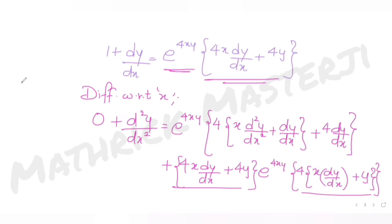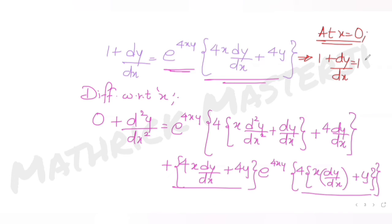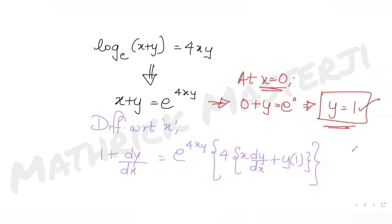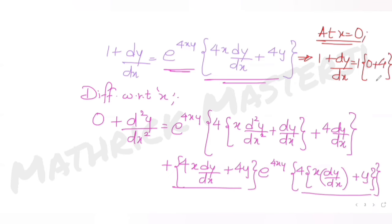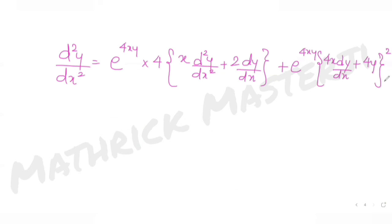Next, let's find dy/dx at x = 0. Substituting x = 0 into 1 + dy/dx = e^(4xy)·(4x·(dy/dx) + 4y): we get 1 + dy/dx = e^0 · (0 + 4·1) = 4. So dy/dx = 4 - 1 = 3.